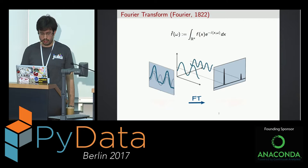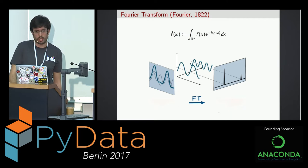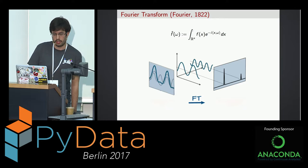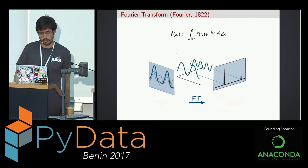Now, the Fourier transform has problems. Functions with many frequencies will not be optimally represented, and it also has no time information. When you apply the Fourier transform, you take the integral over all time or all space — therefore you will know the frequencies, but you will never know when or where the frequencies happen. This property you would like to have in some applications, like sound processing, when you want to know when a certain sound happened.